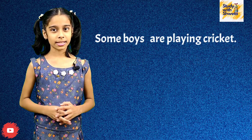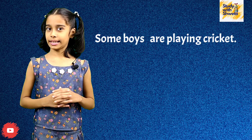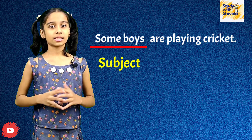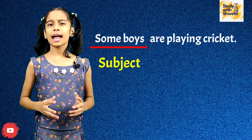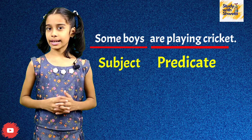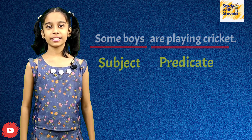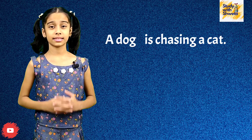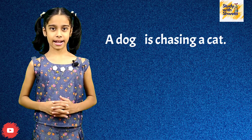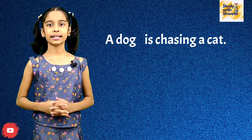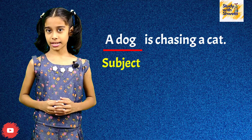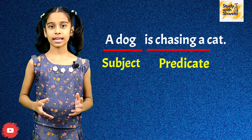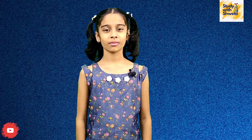Some boys are playing cricket. In this sentence, 'some boys' is the subject and 'are playing cricket' is the predicate. A dog is chasing a cat. In this sentence, 'a dog' is the subject and 'is chasing a cat' is the predicate.